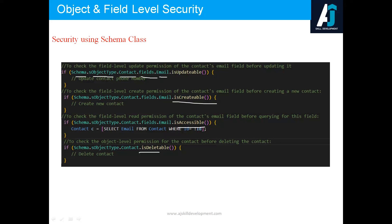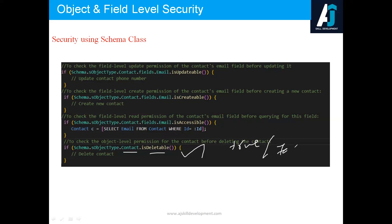For object-level permissions, for example checking delete permission on the Contact object, you can use: Schema.SObjectType.Contact.isDeletable(). If the user has delete permission this returns true, otherwise false. Using these Schema class methods you can easily check user permissions in your Apex code without throwing any exception — you get true or false and handle your SOQL or DML accordingly.